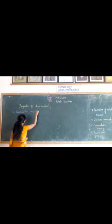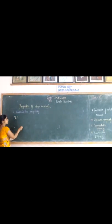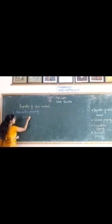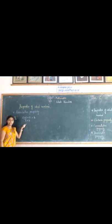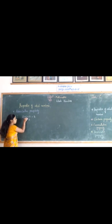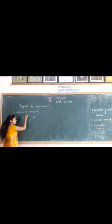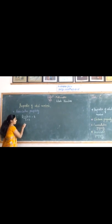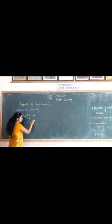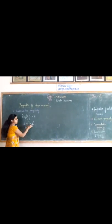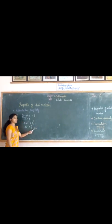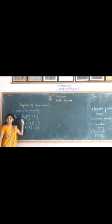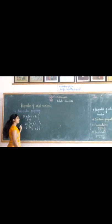Consider the example: 2 plus 1 plus 3. We add 2 and 1 to get 3, then add 3 to get 6. Here we change the grouping of the numbers: group 2 plus 1 as one group and 3 as another. Next, we group 1 plus 3 as one group and 2 as another — that is, 2 plus (1 plus 3). We get 1 plus 3 equals 4, then 2 plus 4 equals 6. When the grouping of the numbers is changed, we get the same answer. This is for addition.